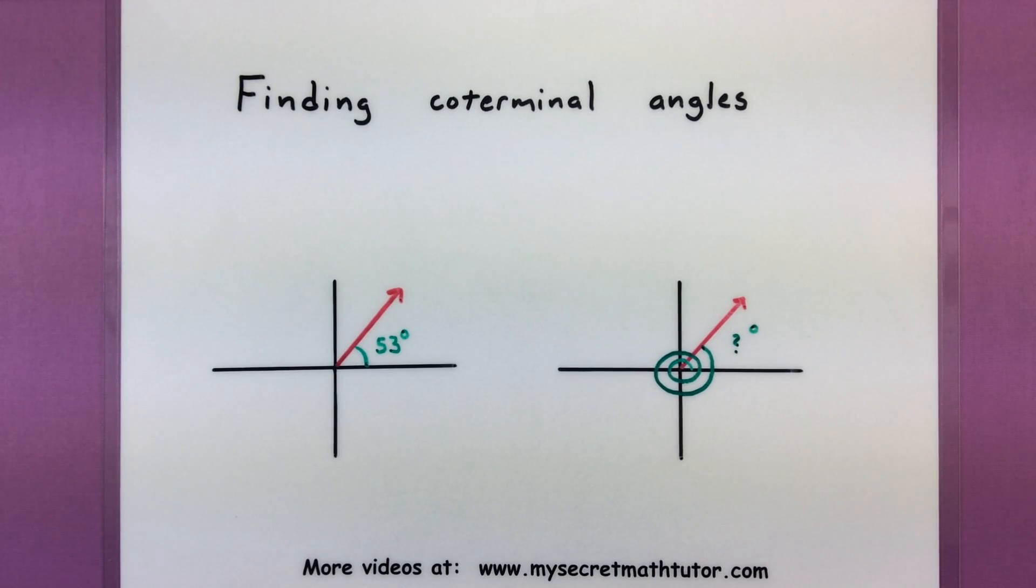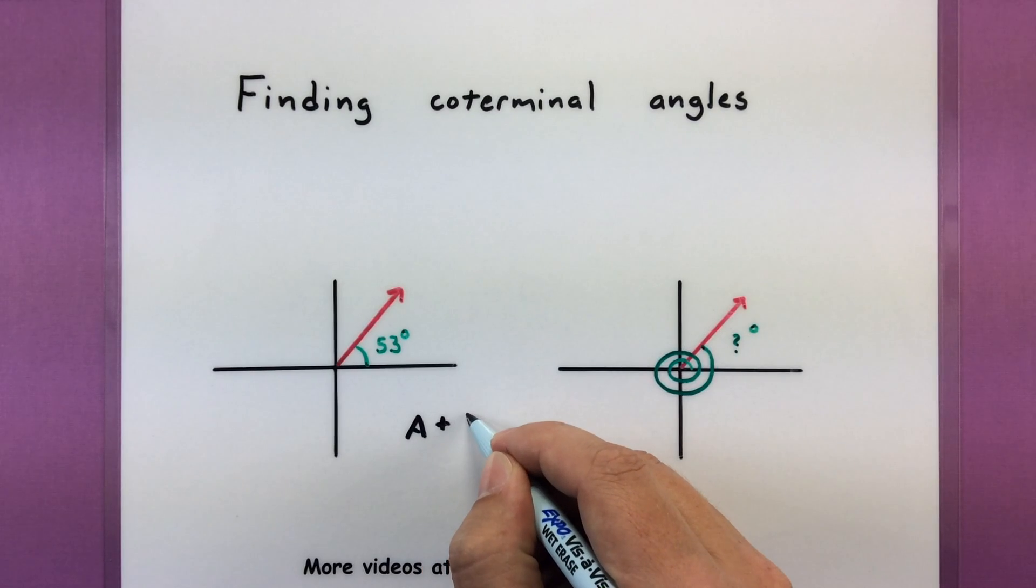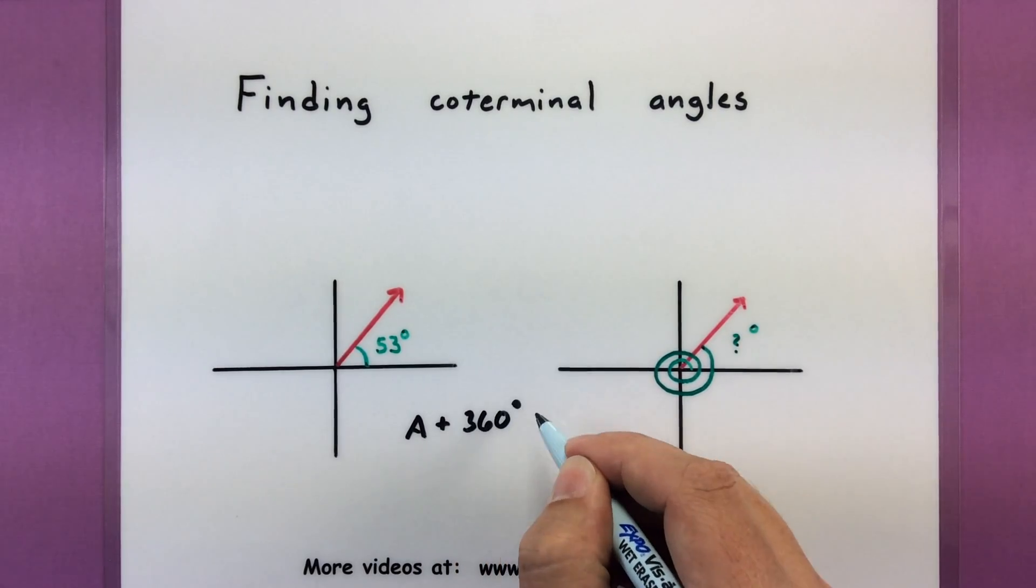Now the only thing you really have to remember, like how can I find more coterminal angles, is that you can take an angle, spin it around the axis a full 360 degrees, and you'll stop in the same spot. So a nice quick formula to memorize is you can start with your angle and you can add multiples of 360 degrees.